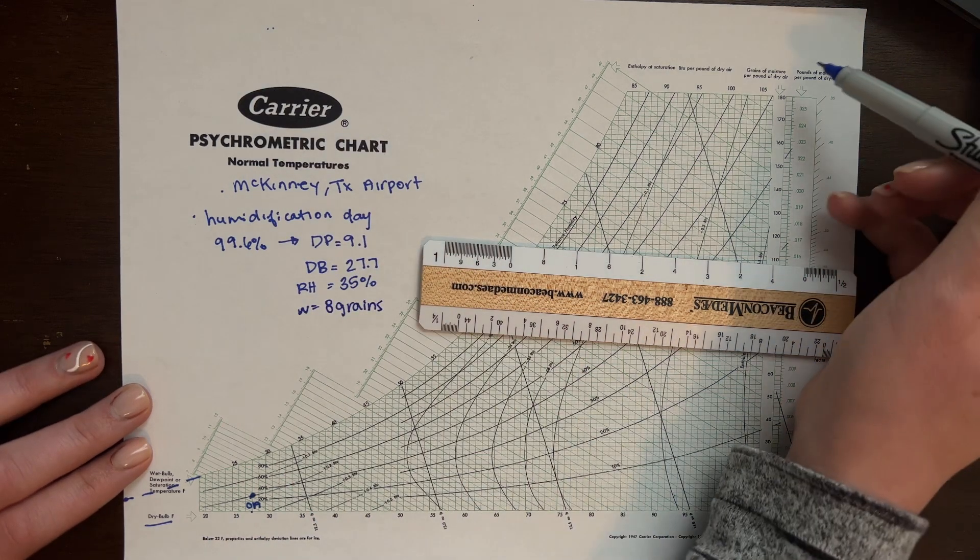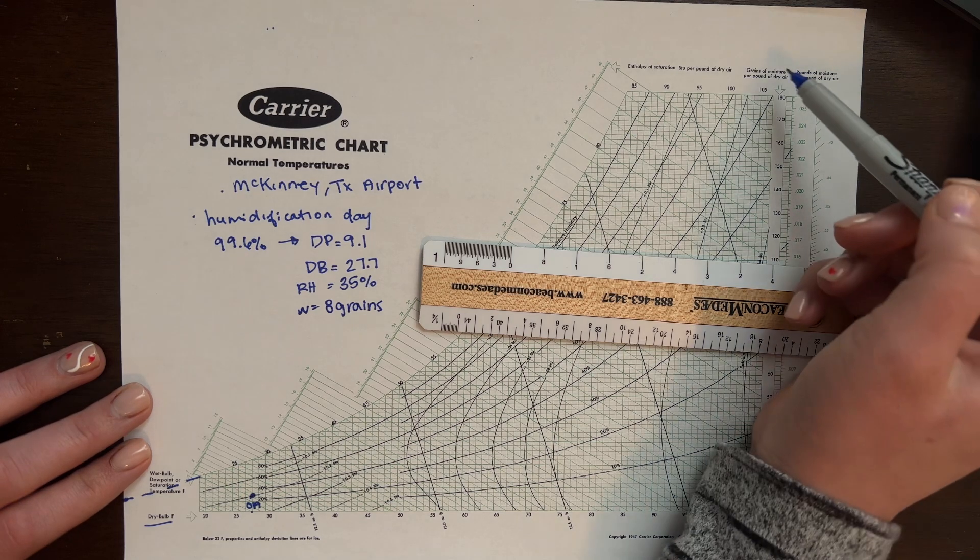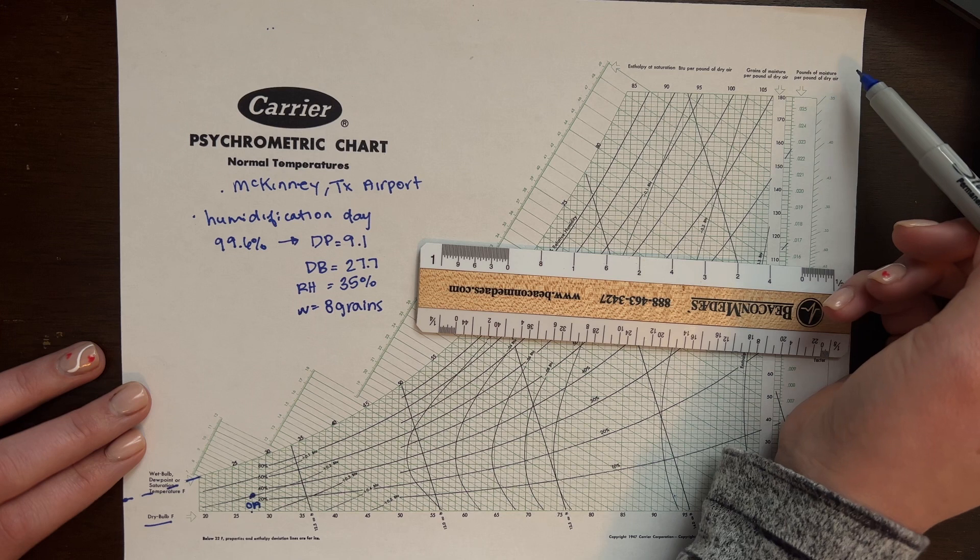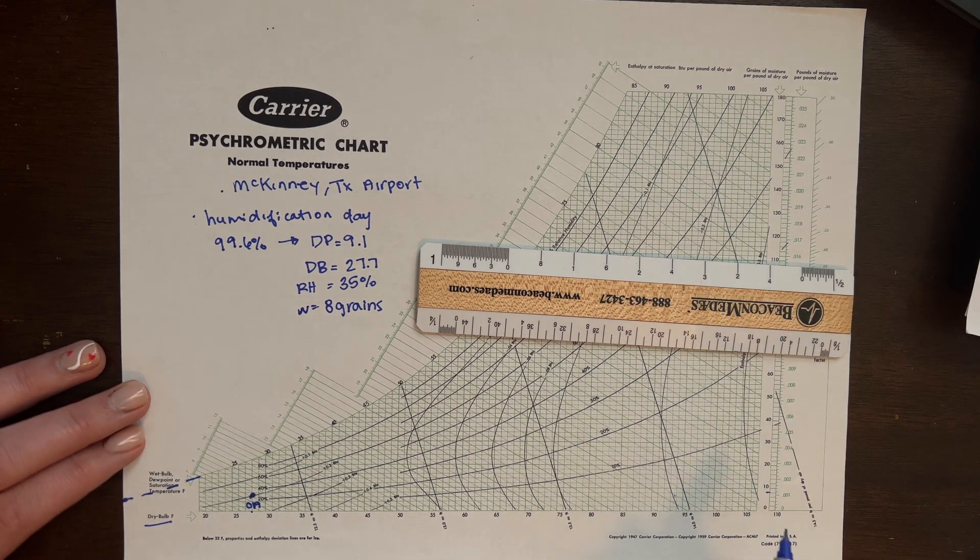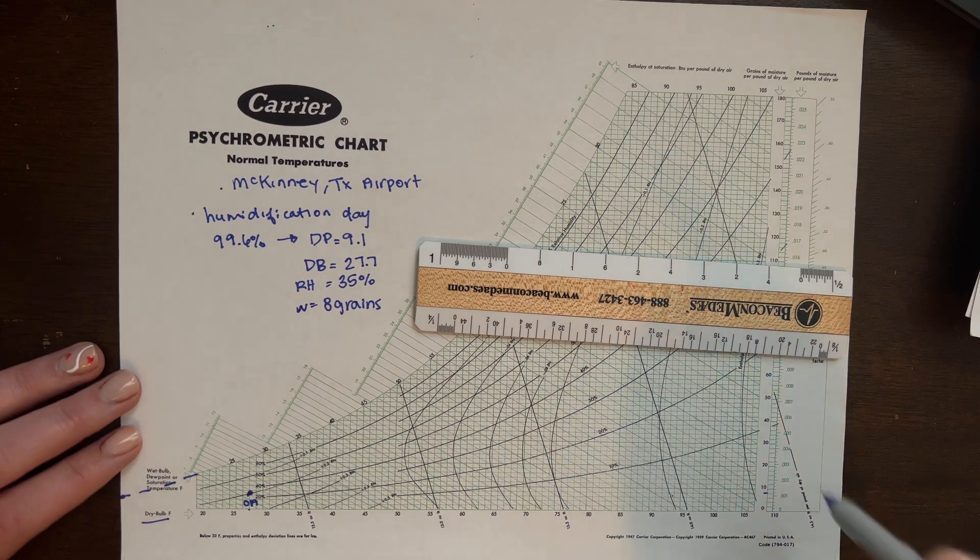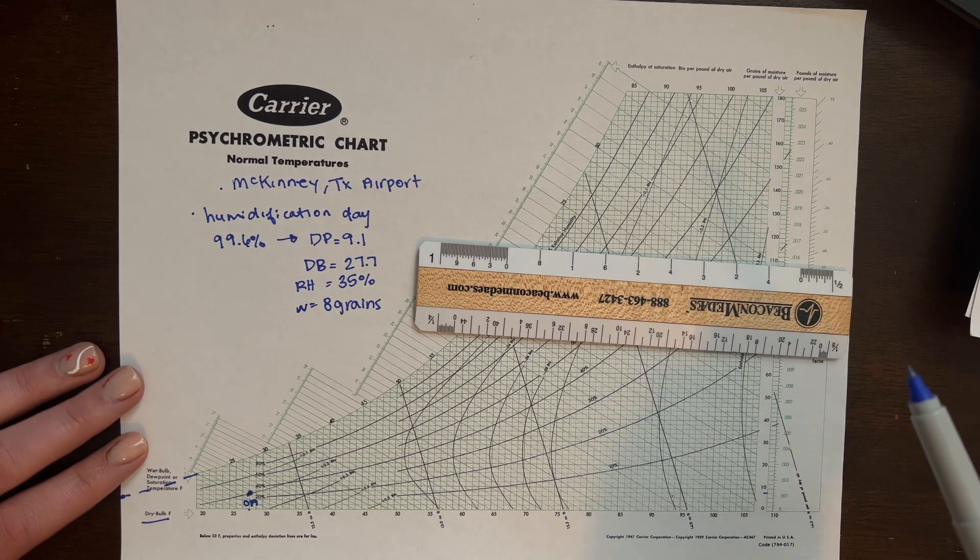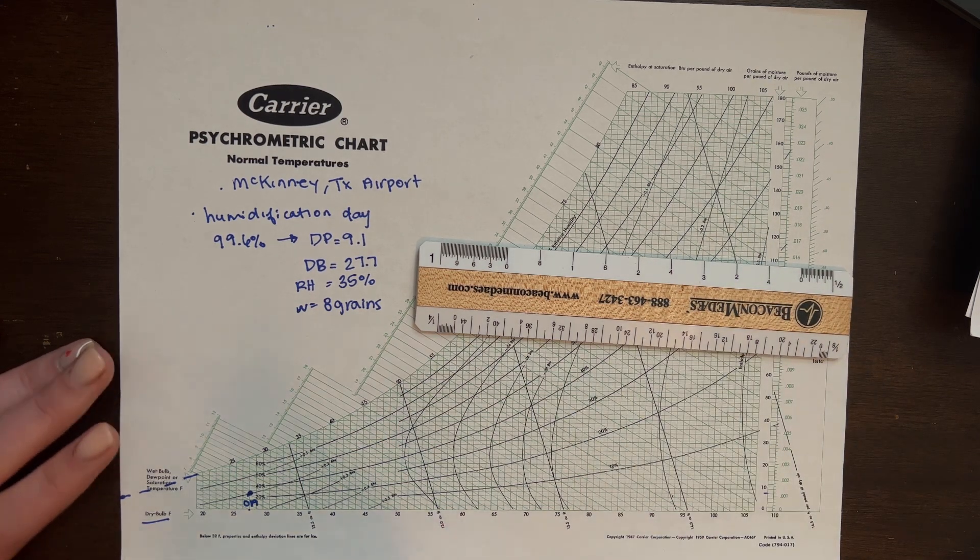You can see right here on our y-axis, we have the amount of moisture either in grains of moisture per pound of dry air or pounds of moisture per pound of dry air. I like using grains because it's a little easier to read on this graph. The conversion unit between the two is 7,000 grains equals one pound of moisture. So just something to note.